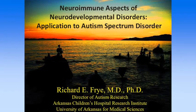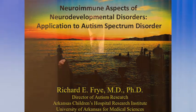Today I'm going to talk about neuroimmune aspects of neurodevelopmental disorders with application to autism spectrum disorders. A lot of my interests are in metabolic abnormalities associated with autism and other neurodevelopmental disorders. As we've researched autism and neurodevelopmental disorders, we found that one of the really key pieces that seems to be important is neuroimmune problems and how they seem to play into problems with development.